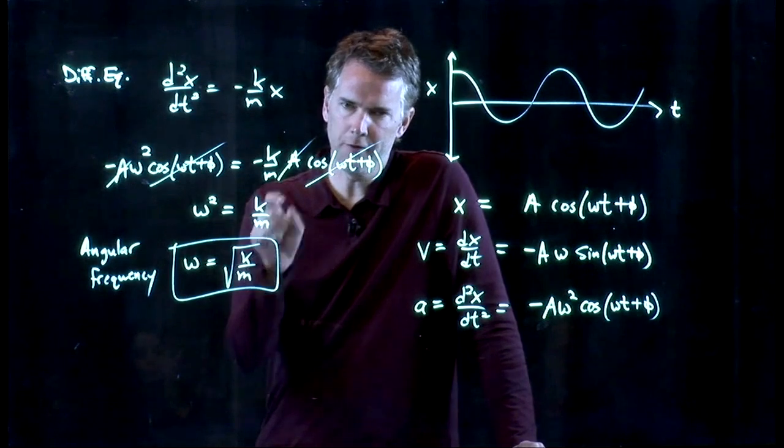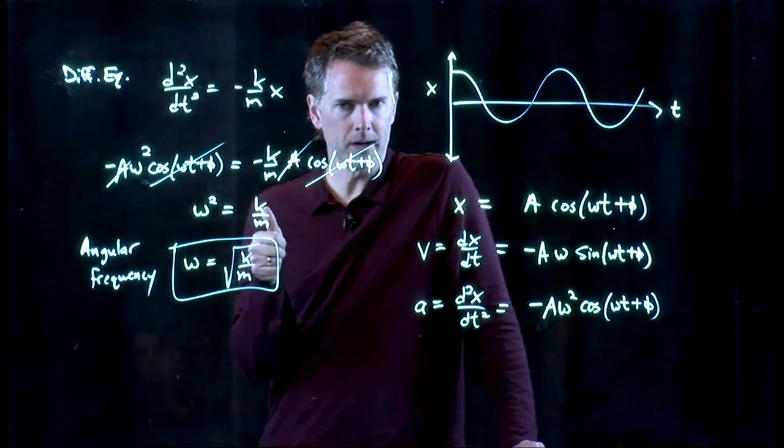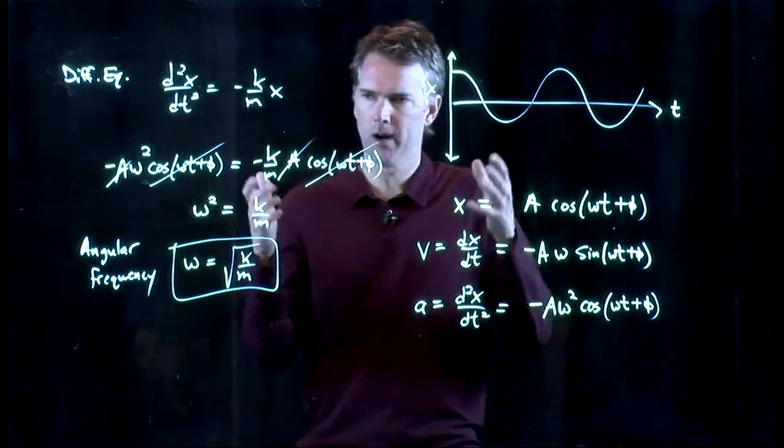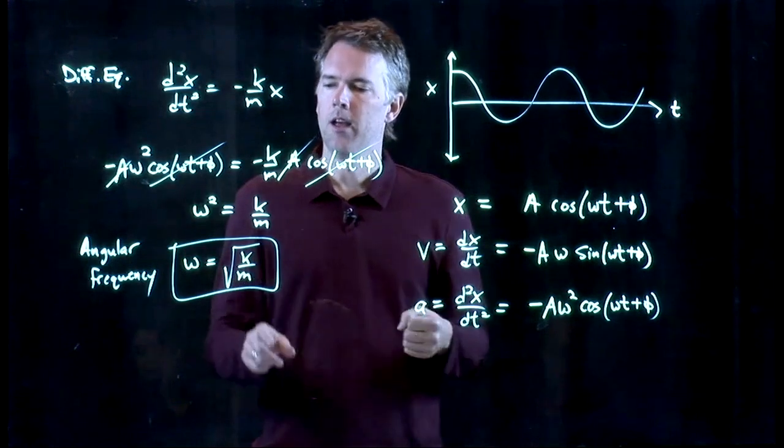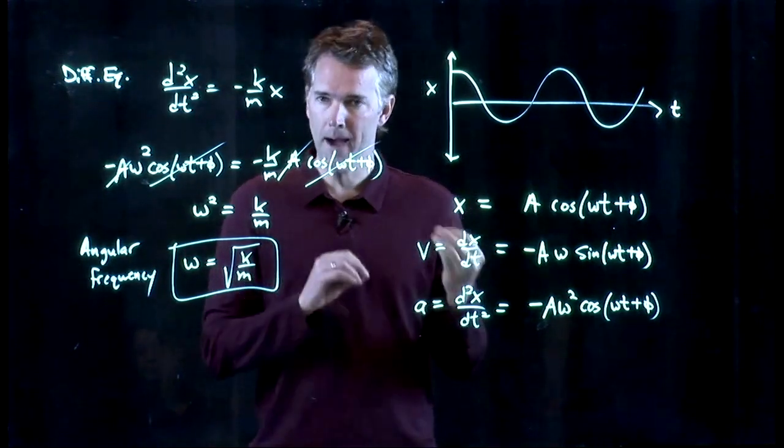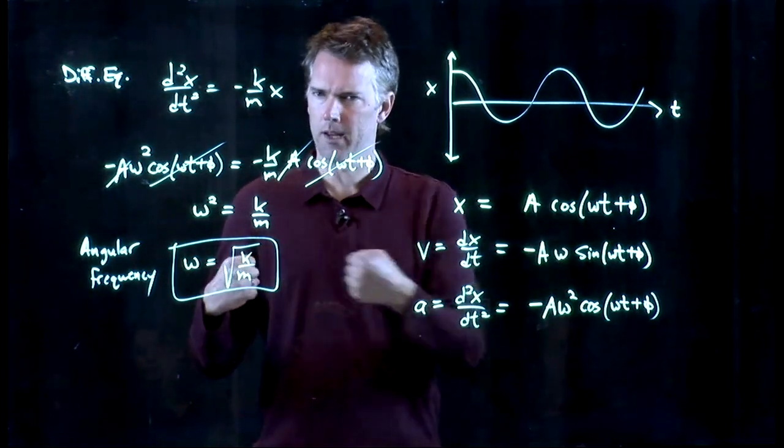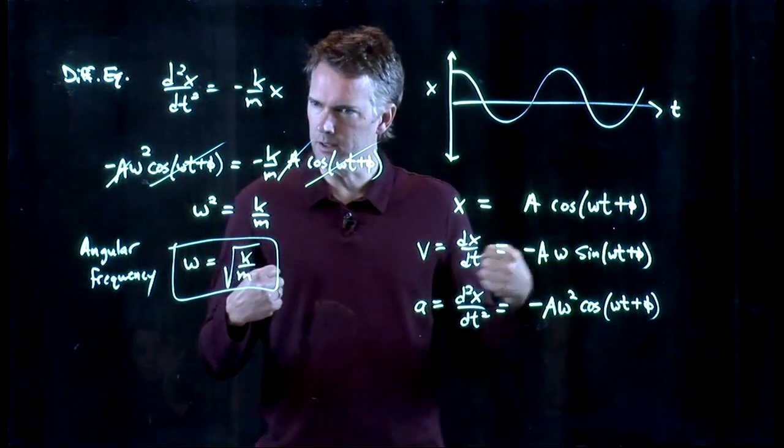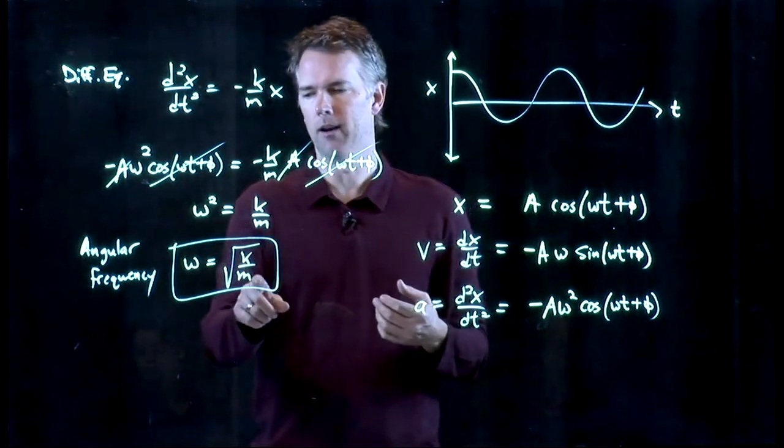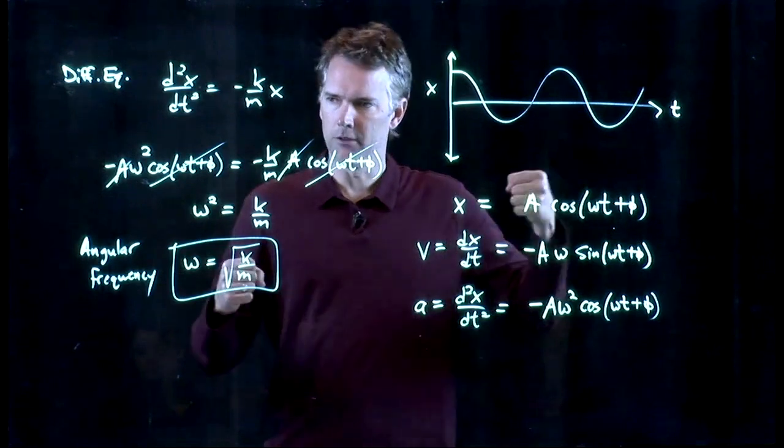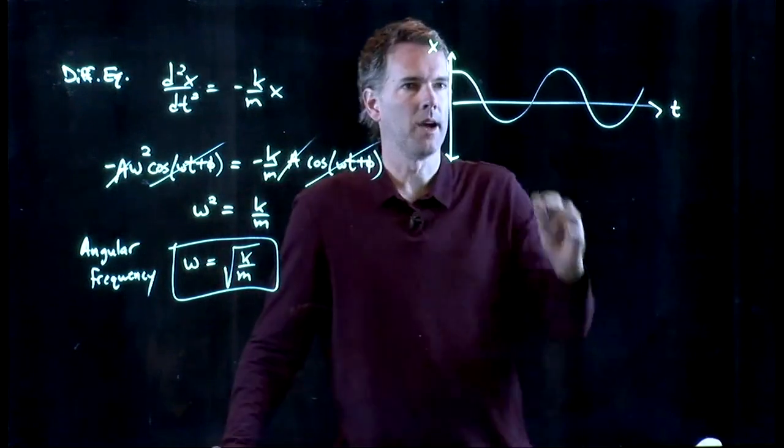This is how fast that thing goes back and forth. If I have a stiffer spring, k gets bigger, omega gets bigger, and that should make sense to you. If I have a stiff spring, that box is going to go back and forth really fast. If I have instead a large mass attached to the spring, that spring can't pull on it and move it quite as easily. And so m big in the denominator means that omega is small. And so that would be a big sluggish mass going back and forth.